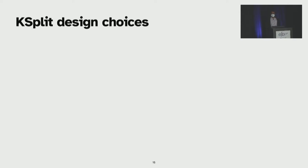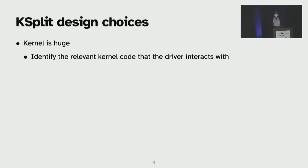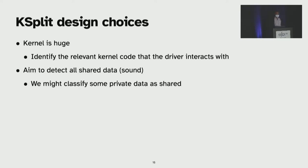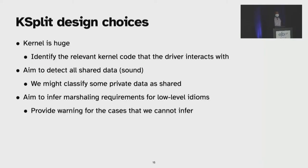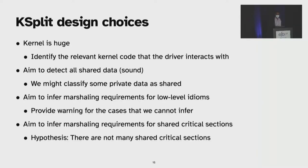To achieve our goals, we need to make some practical design choices. First, the kernel is huge, so we have to identify the relevant code that the driver interacts with. And we aim to detect all the shared data, but due to the limitation of static analysis, we might classify some private data as shared and vice versa, which would result in additional synchronization overhead. While aiming to infer marshaling requirements for low-level kernel idioms, we might not be able to detect something. For that, we will issue a warning to the developer. The same for shared critical sections, but the good news is from our analysis, from analyzing all the device drivers, there are not that many shared critical sections.